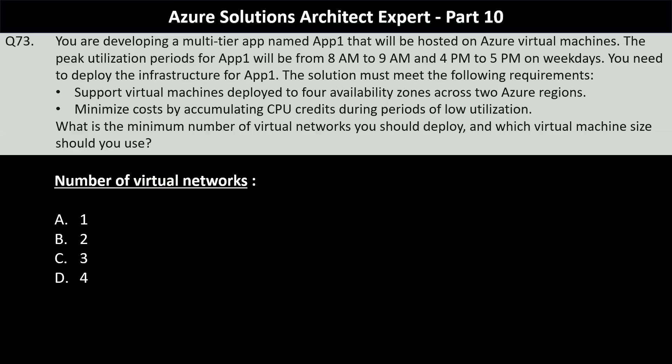You are developing a multi-tier app named App One that will be hosted on Azure Virtual Machines. The peak utilization periods will be from 8 a.m. to 9 a.m. and 4 p.m. to 5 p.m. on weekdays. You need to deploy the infrastructure for App One. The solution must support virtual machines deployed to four availability zones across two Azure regions, and minimize cost by accumulating CPU credits during periods of low utilization.